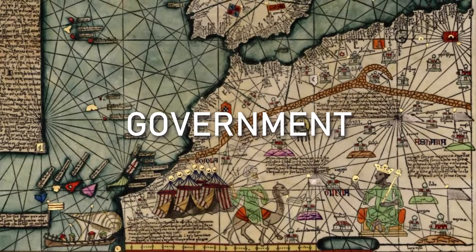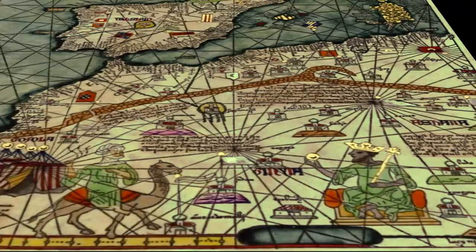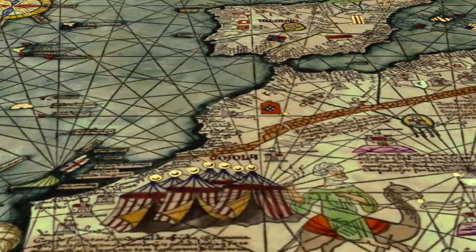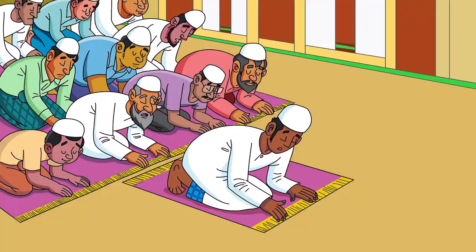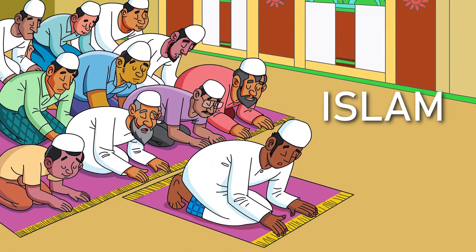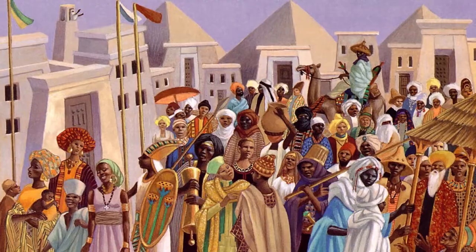The government of the Mali Empire was led by the Emperor, who was called the Mansa. The empire was then divided up into provinces that were each led by a governor called the Farba. The religion of Islam played an important part in the government, and many of the government administrators were Muslim scribes.